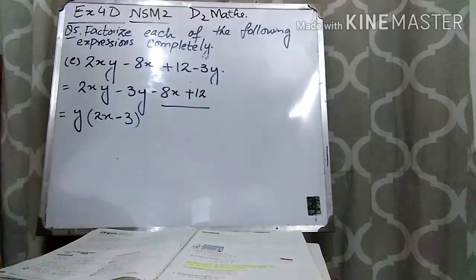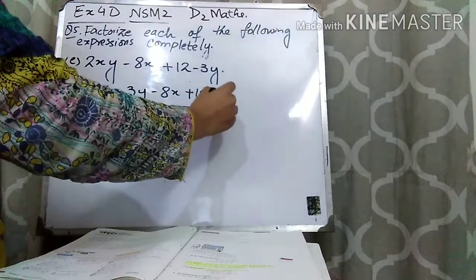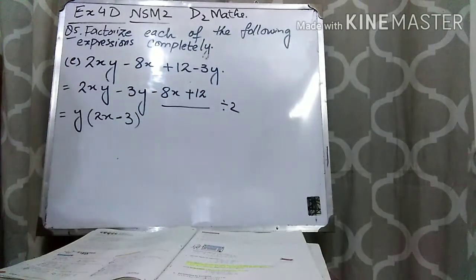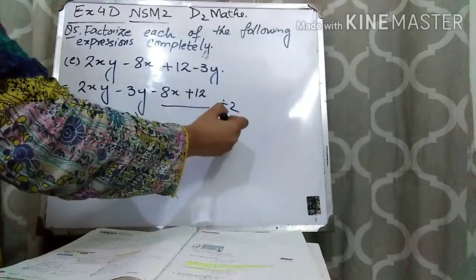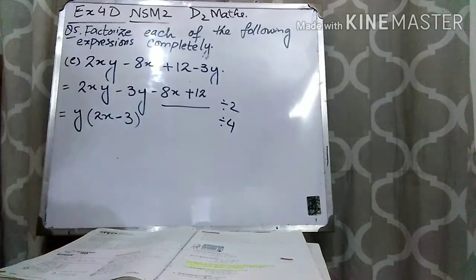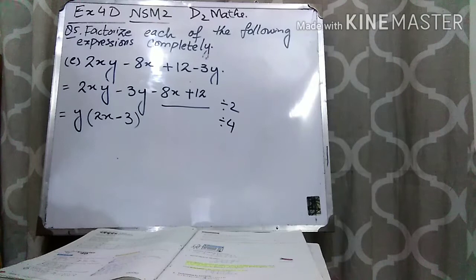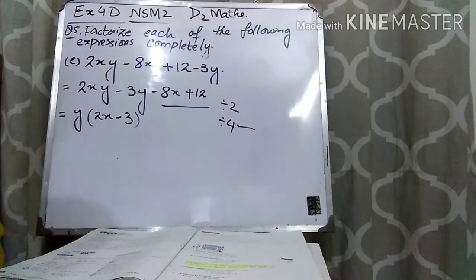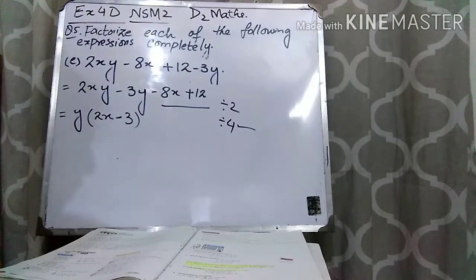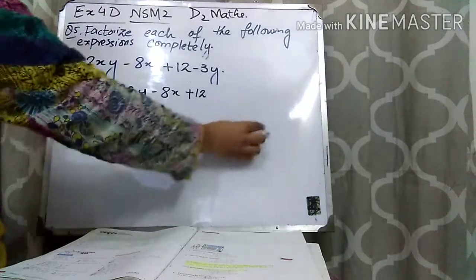From the middle two terms, take 4 common because 8 and 12 are both divisible by 4. Students, you should not take just 2 common. As I have told you in my previous lectures, whenever you take a common number always go for the greater number. Since 8 and 12 are divisible by both 2 and 4, take 4 common and go for the greater number.